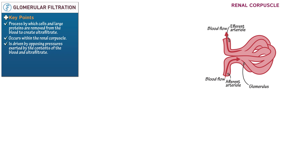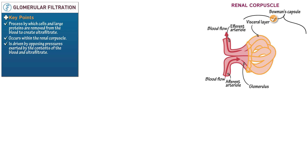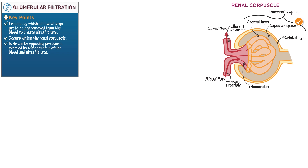Next, draw the two layers of Bowman's capsule. Show that the visceral layer overlies the glomerulus. We've peeled the visceral layer back to show the capillaries. The parietal layer surrounds the glomerulus more loosely. Label the capsular space, which is the space between the parietal and visceral layers of Bowman's capsule.